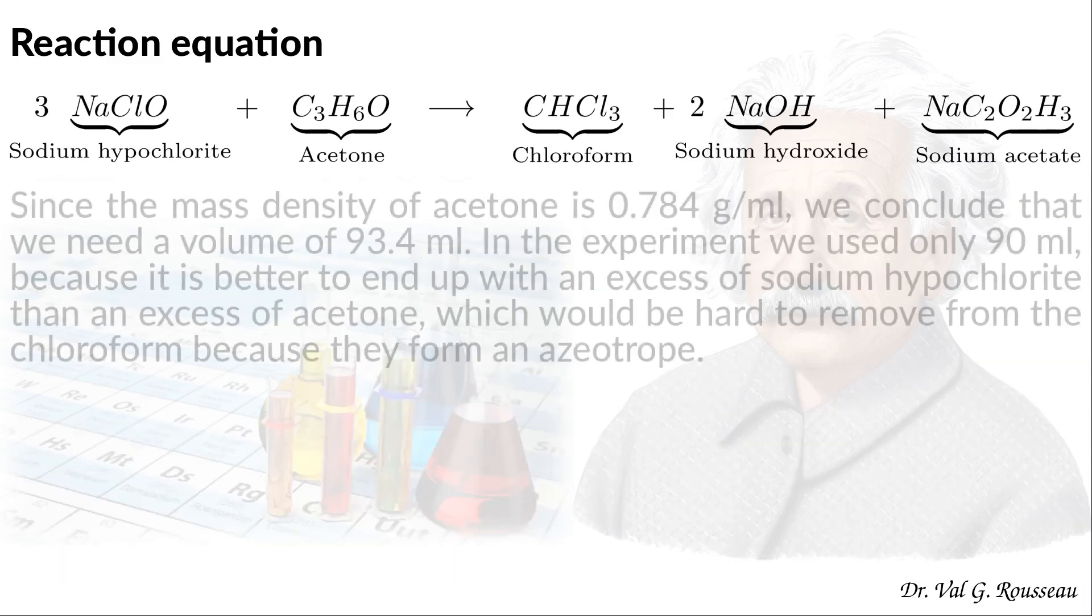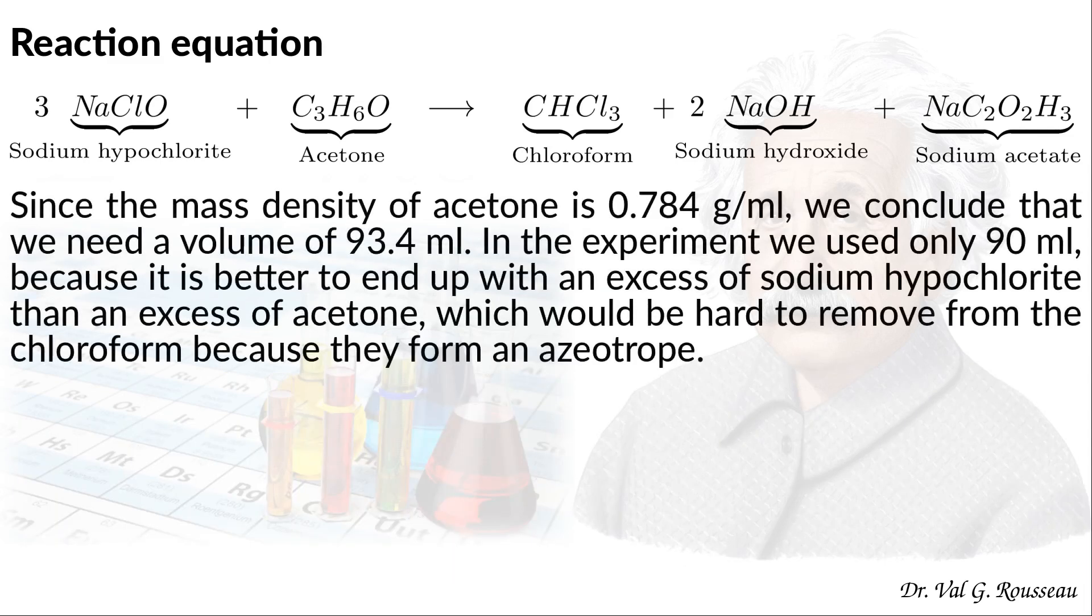From the molar mass table, this corresponds to 73.2 grams. We can find the mass density of acetone to be 0.784 grams per ml. So, the 73.2 grams have a volume of 93.4 mls. Now, we use only 90 mls. The reason is that it is better to end up with an excess of sodium hypochlorite than an excess of acetone.